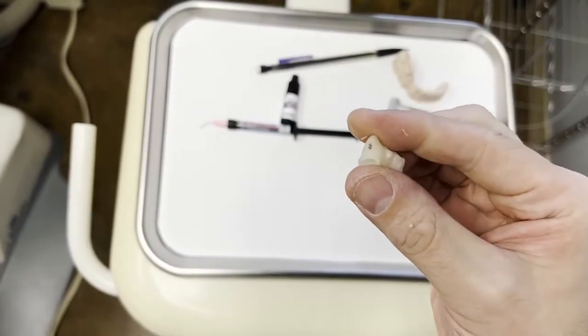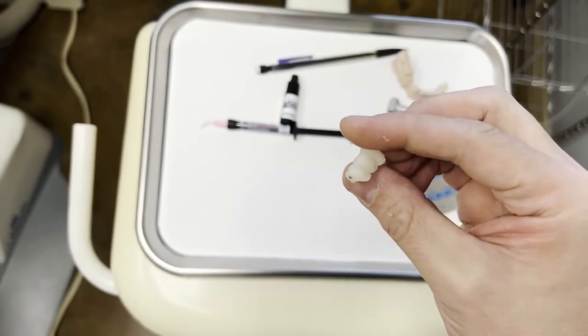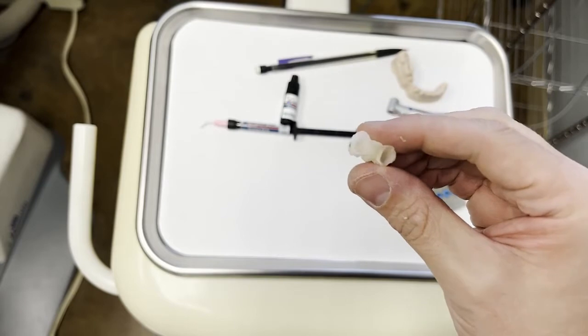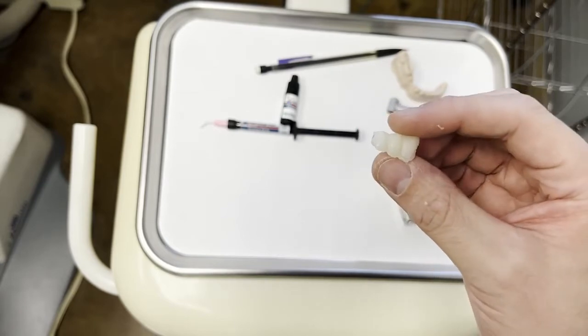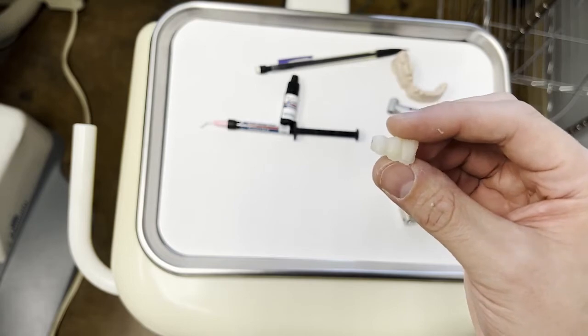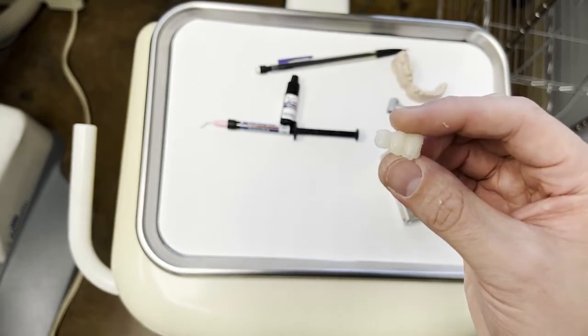So I can see a good amount of our flash is removed. We still have some to work with, but our interproximals are starting to take shape. Now we still have to work the facial here and we obviously have to work the interproximals from the abutments into the pontic. We're going to work on that now with that same burr, and then after that we will move on to our next step.